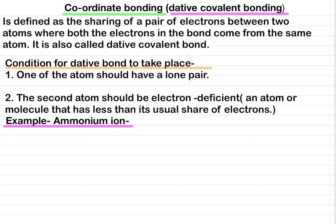The conditions for a dative covalent bond to take place are: number one, one of the atoms should have a lone pair. A lone pair of electrons is an unbonded pair which does not involve itself in bonding. The second condition: the second atom should be electron deficient — meaning an atom or molecule that has less than its usual share of electrons.